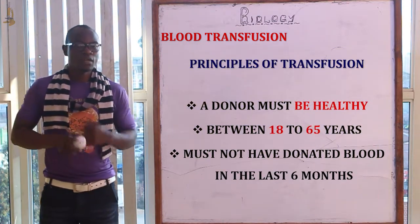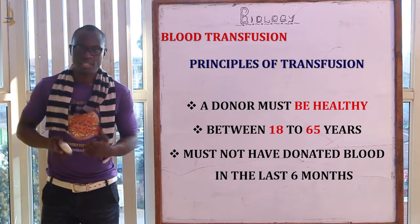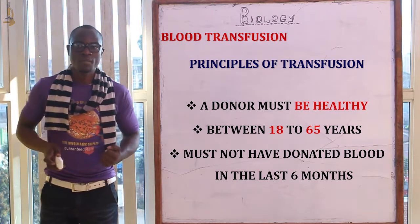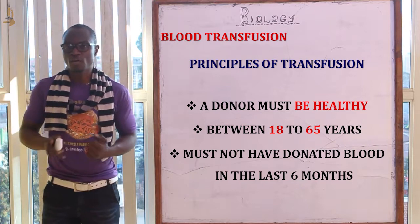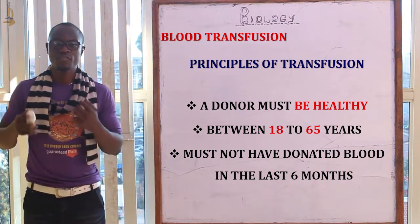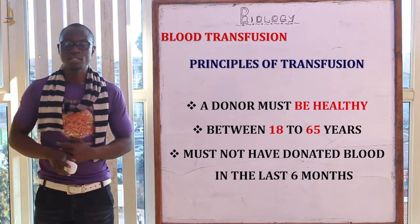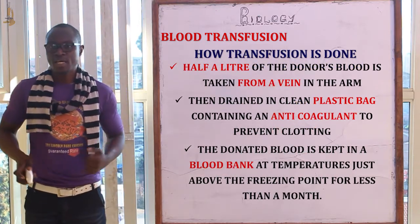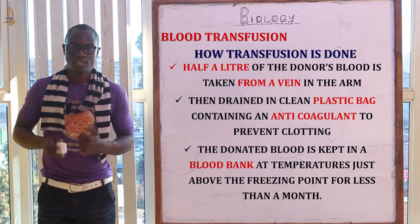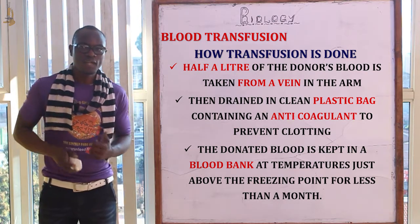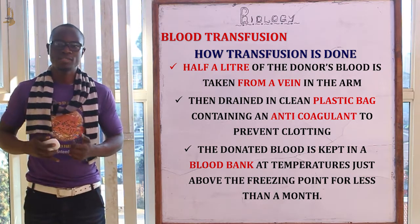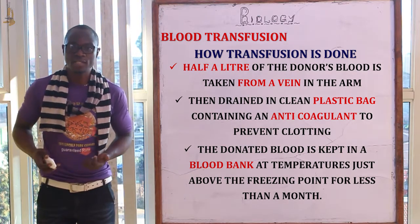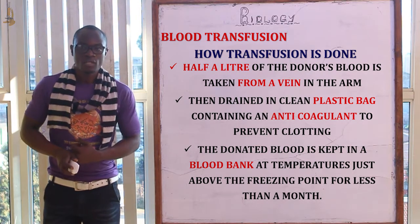Now let's look at the principles or rules of blood transfusion. First, the donor must be a healthy person. They must be between 18 to 65 years of age, and they must not have donated blood in the last six months. Regarding the procedure, half a liter of the donor's blood is taken from the vein in the arm and placed in a clean plastic bag containing an anti-coagulant to prevent blood clotting.